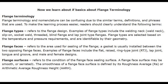Now we learn about the basics of flange terminology. Flange terminology and nomenclature can be confusing due to similar terms, definitions, and phrases that are used. To make the learning process easier, readers should clearly understand the following terms. Flange types refers to the flange design. Examples include the welding neck, slip-on, socket weld, threaded, blind flange, and lap joint type flanges. Flange types are selected based on temperature and pressure requirements, and are identifiable by their geometry.